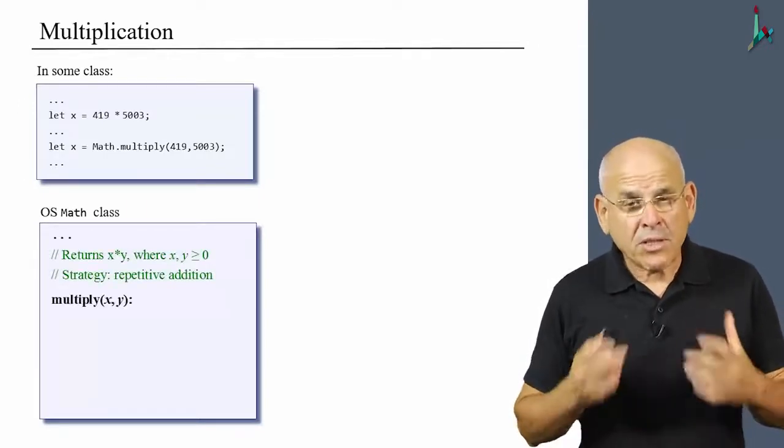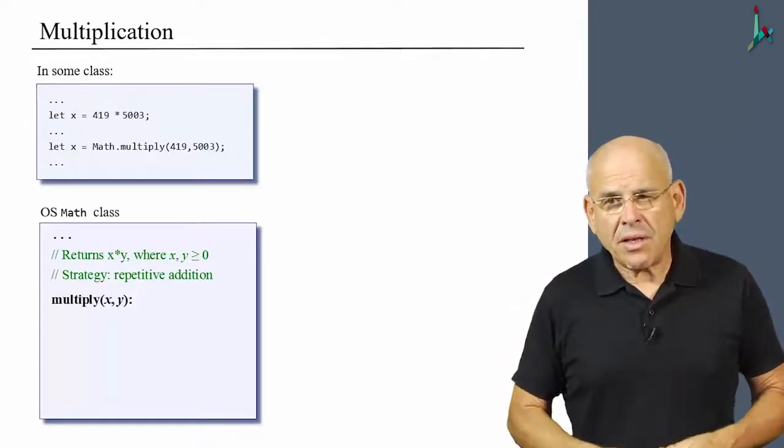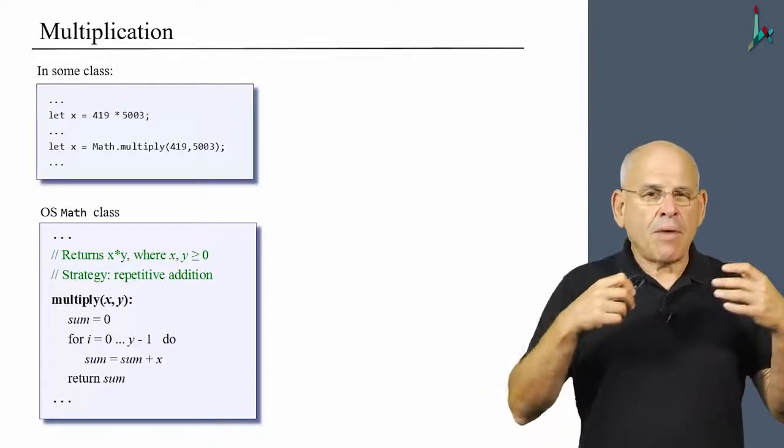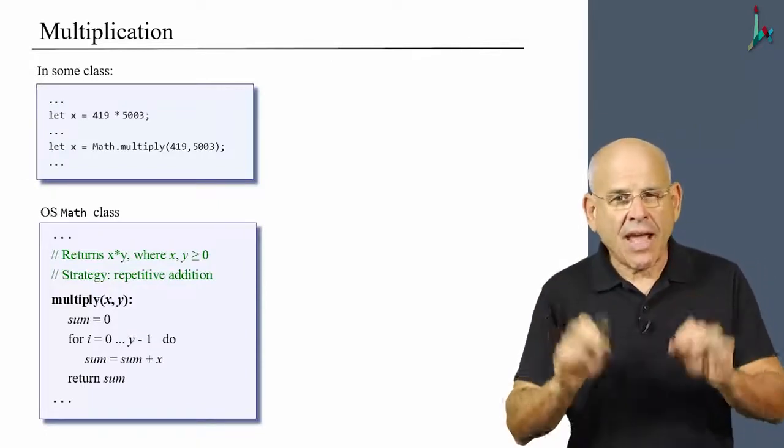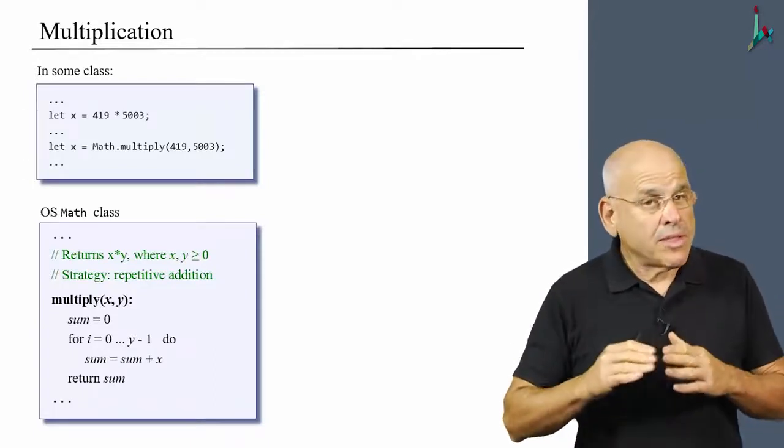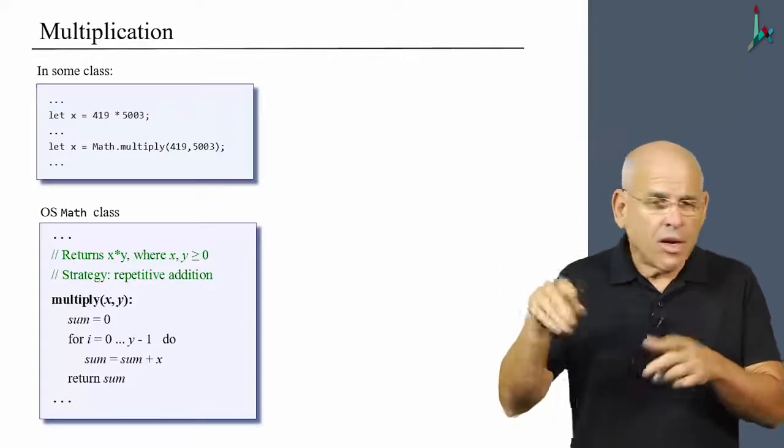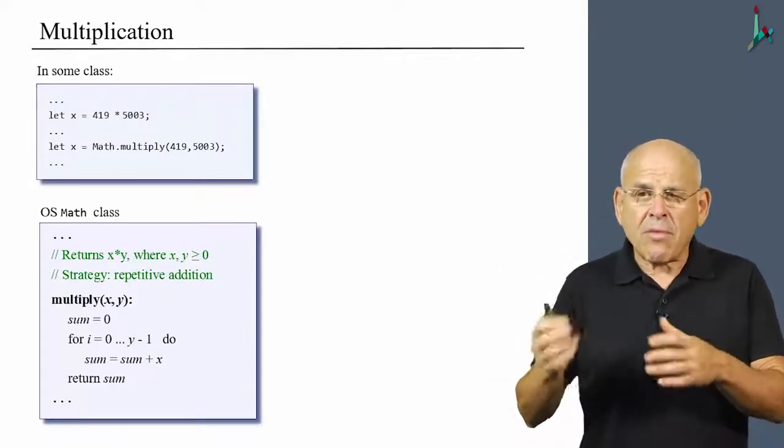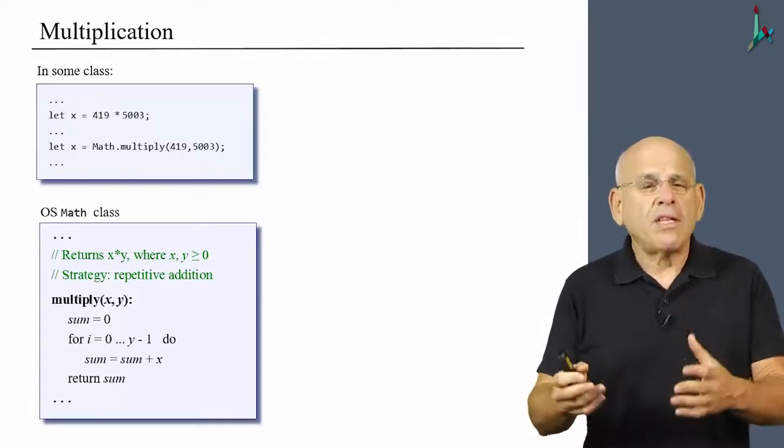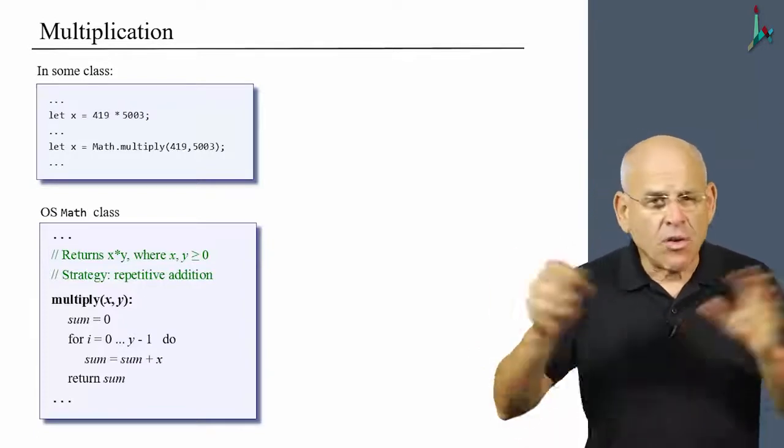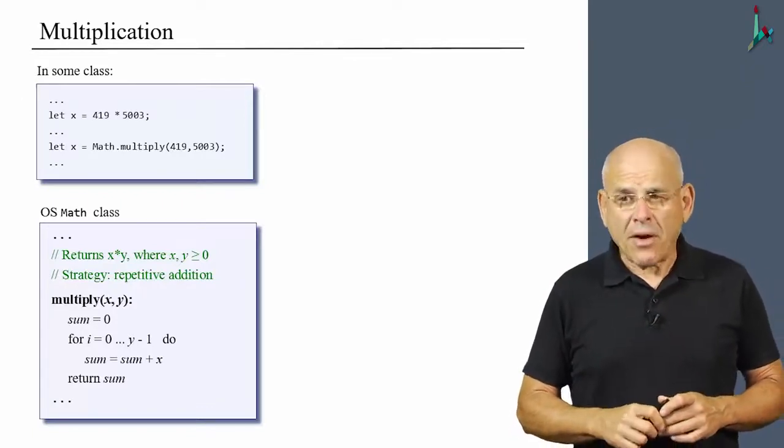And someone has to deliver this functionality. And this agent is, of course, the math class in our Jack operating system. So here's an example of a possible solution to multiplication. We're going to do what is known as repetitive addition. Basically, we are adding x to some accumulator y times. Now, before we continue, I'd like to say a few words about the syntax that we are going to use in this unit and in all the subsequent units from now until the end of this module.